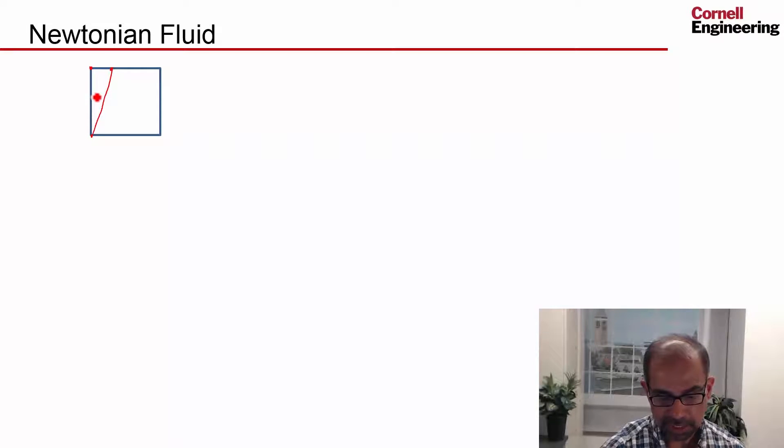And how much it gets skewed, in fact, that angle is given by this velocity gradient du dy. And one can understand this intuitively because if I had a large du dy, it means that this is going to move much faster than that. And so the skewing is going to be more.